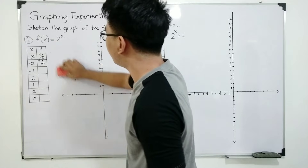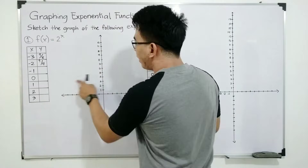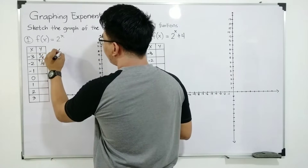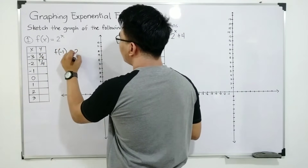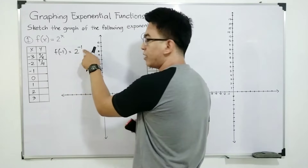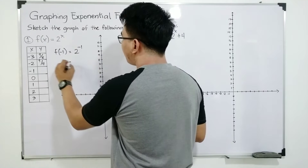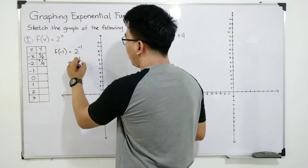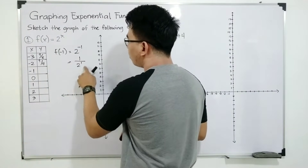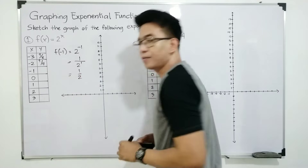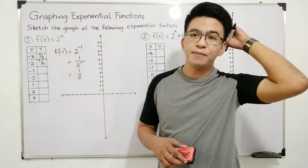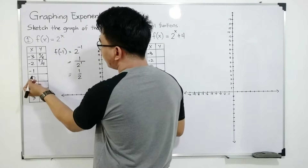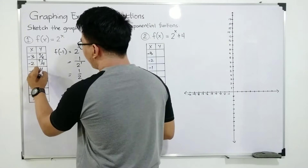Let's move on with negative 1. We have f of negative 1 is equal to 2 raised to negative 1. Remember, this is a negative exponent. To make it positive, ilipat lang natin sa denominator. We have 1 over 2 raised to 1, or simply 1 half. If your x is negative 1, your y is 1 half.